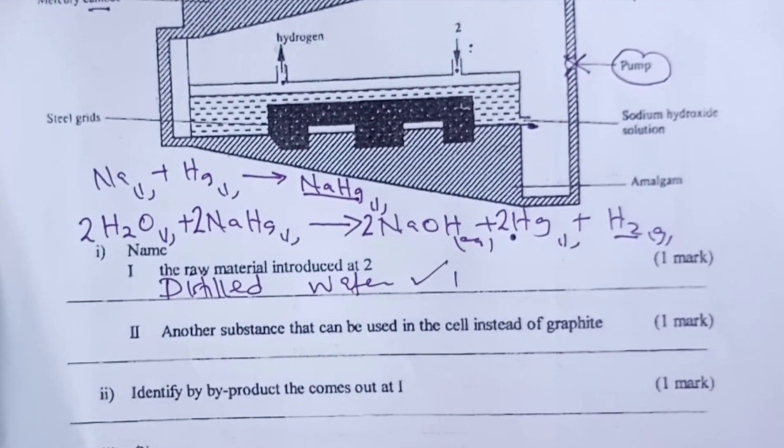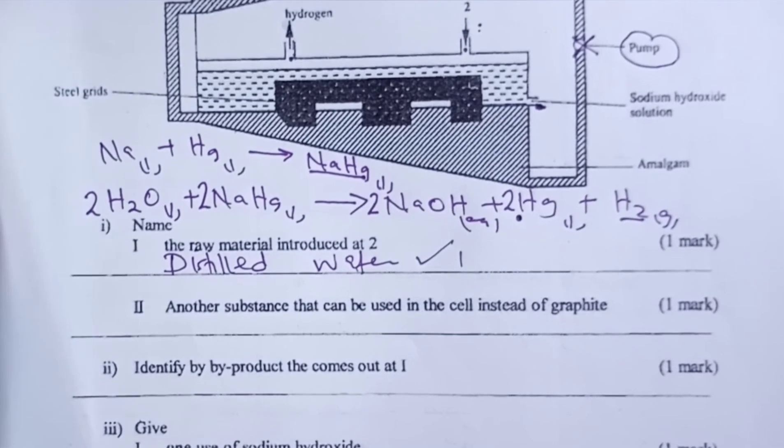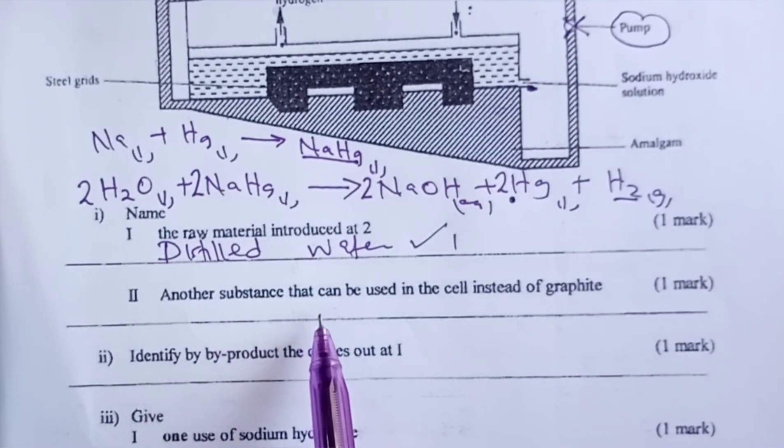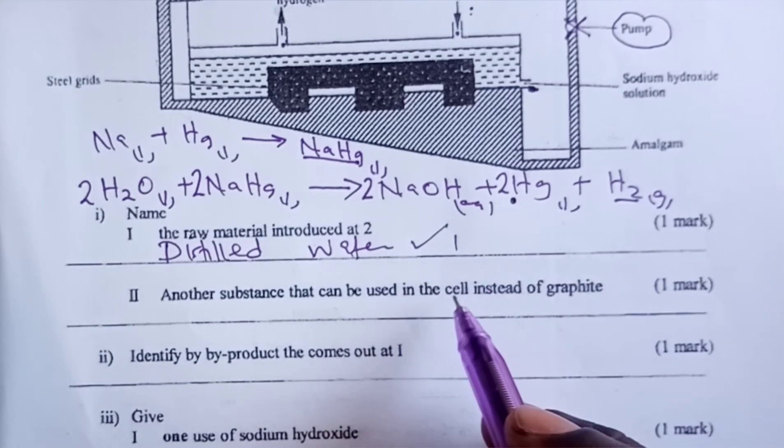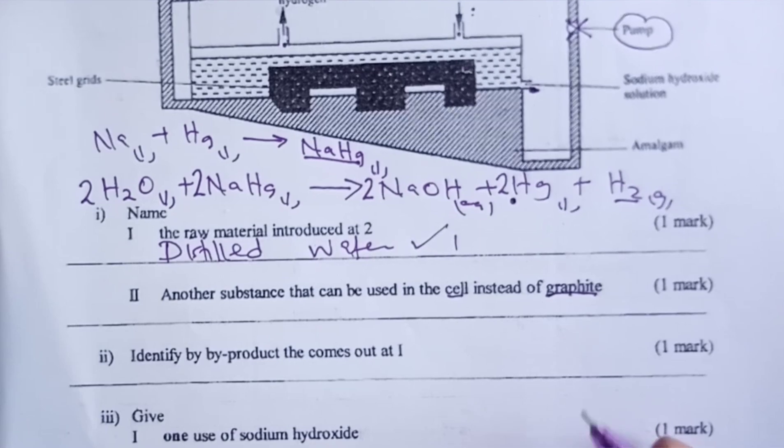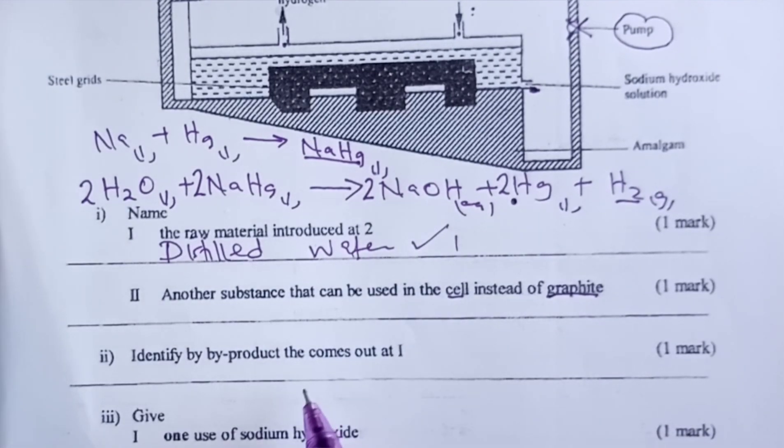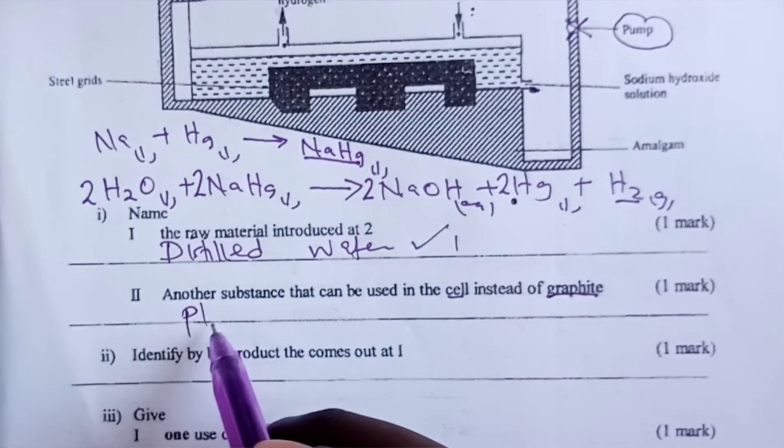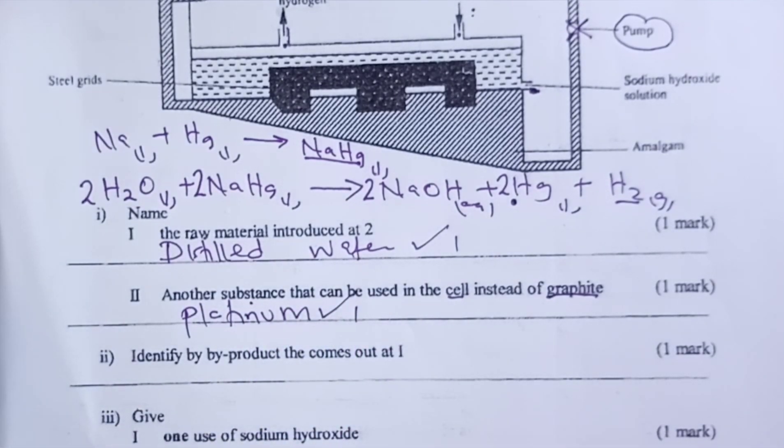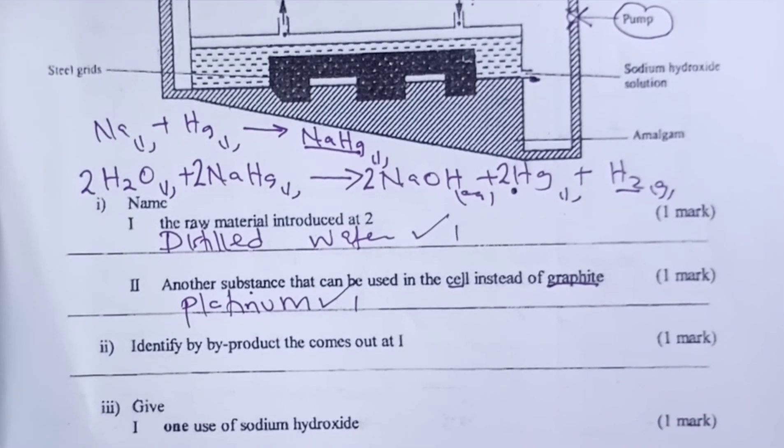Then for part two, the examiner asked us to name another substance that can be used in the cell instead of graphite. Remember graphite is acting as our anode. The expected answer here was platinum. The reason is graphite and platinum don't react with our electrolyte.